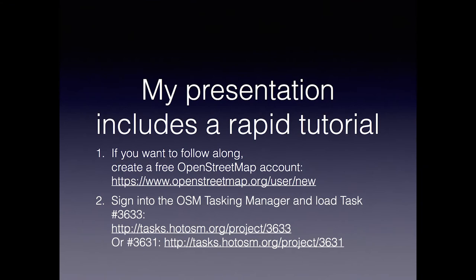Here are the URLs you'll need — I'll present these again later in the slideshow. The first thing you'll need to do is create an OpenStreetMap account, then go to the tasking manager. We're going to map on OpenStreetMap using satellite imagery. It's really easy — you click a button, draw and trace a building, mark it as a building, then save your work every five minutes so the global map gets updated quickly.